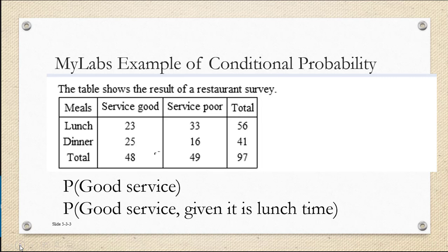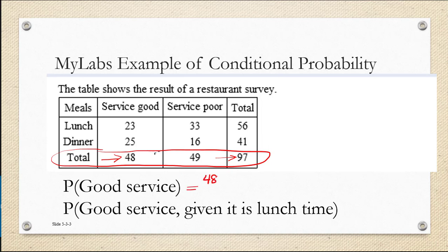Let's start with just the probability of good service. For that, we don't know if it's lunch or dinner, so we're going to look at our totals. The total number of customers that reported good service was 48. Those are the number of times that the event we're looking for — good service — occurred, and the total number of customers surveyed, in other words the total repetitions of the experiment, is 97. So the probability of good service is going to be 48 over 97, which is approximately 0.49.